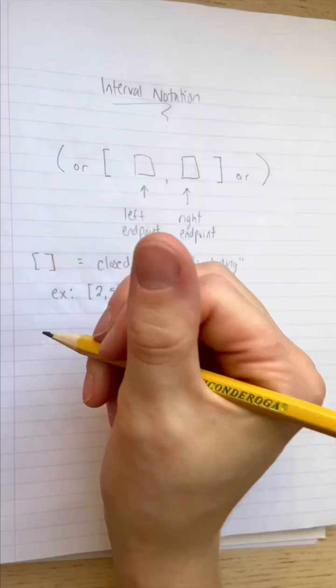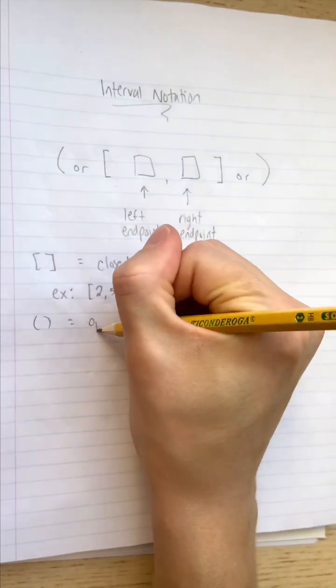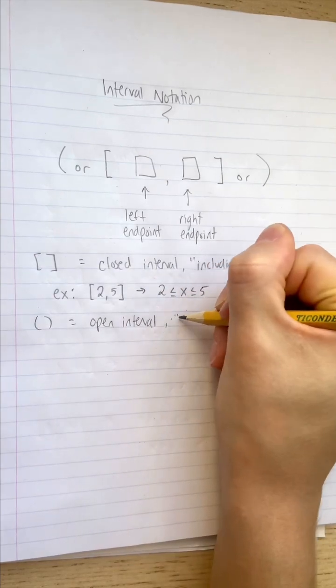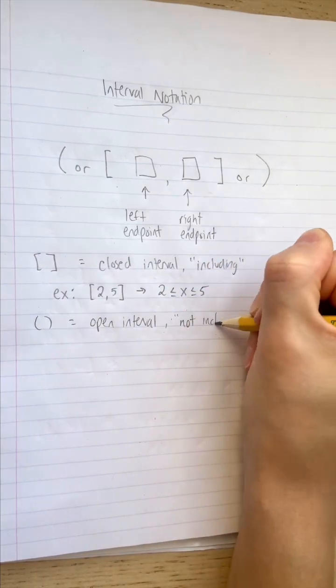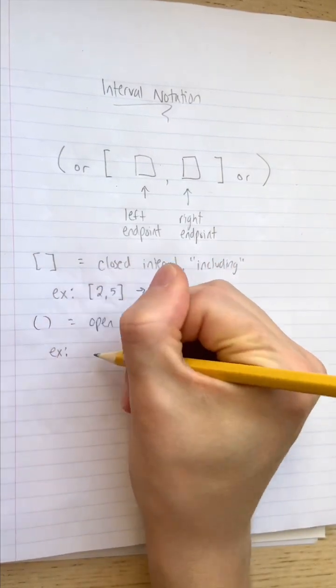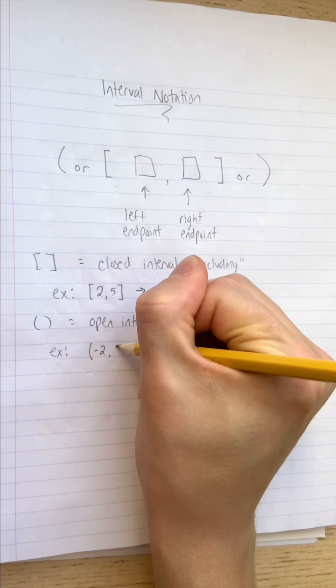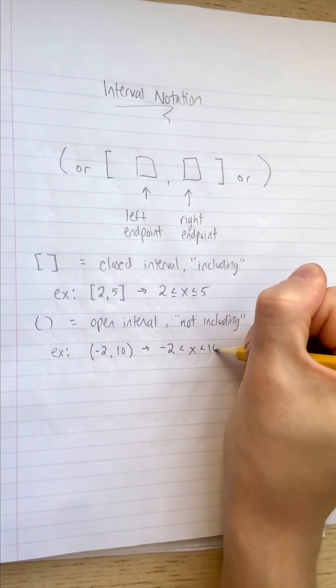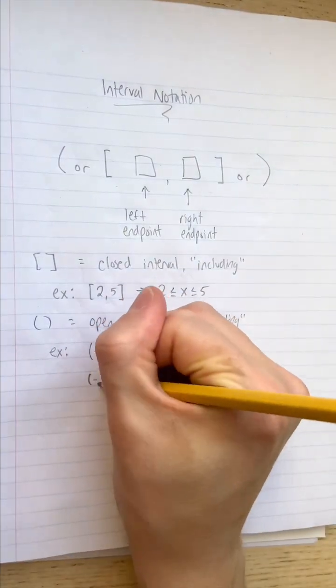Parentheses represent open intervals, where the endpoints are not included. So negative 2 comma 10 in parentheses represents the range of values between negative 2 and 10, but not including negative 2 and 10.